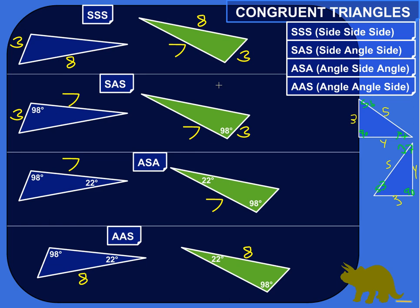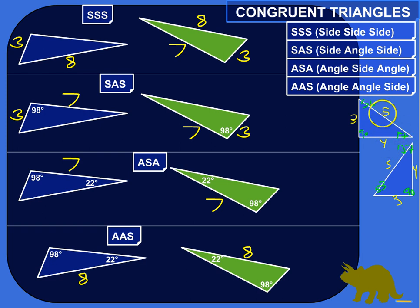The easiest way to tell if two triangles are congruent is if you're actually given all the side measurements and all the angle measurements, and you can tell that all the corresponding measurements are equal. So for example, here I've got two triangles. They look like the same shape and size with one kind of turned in a different direction. Are they congruent?